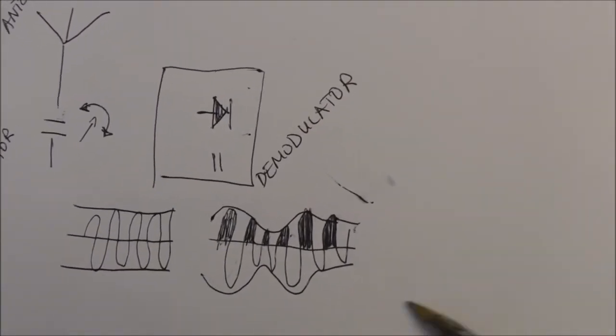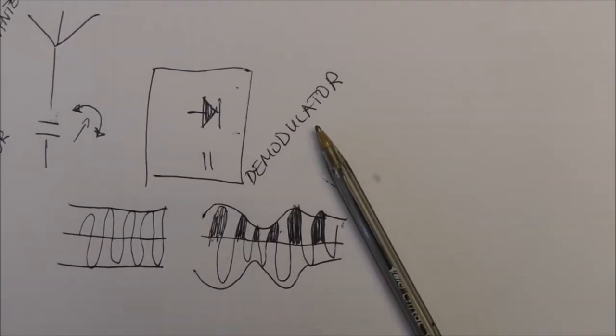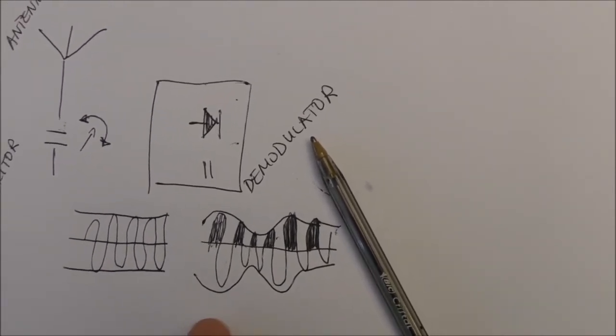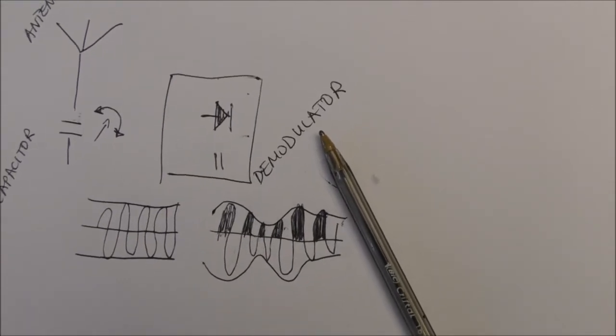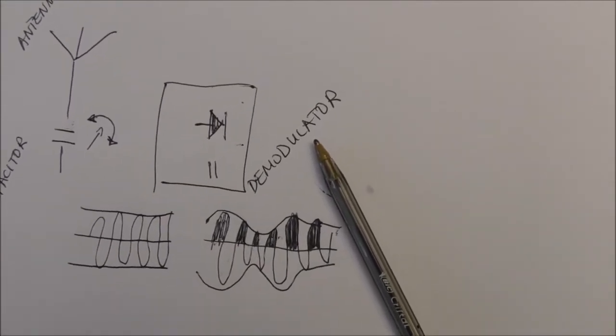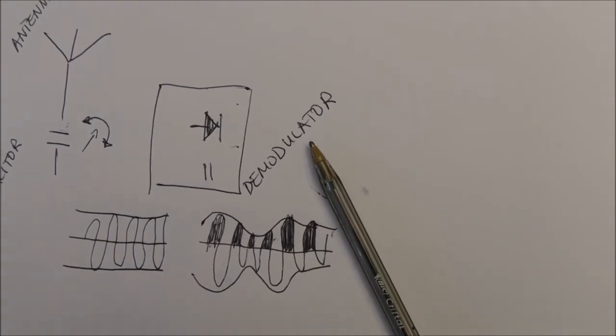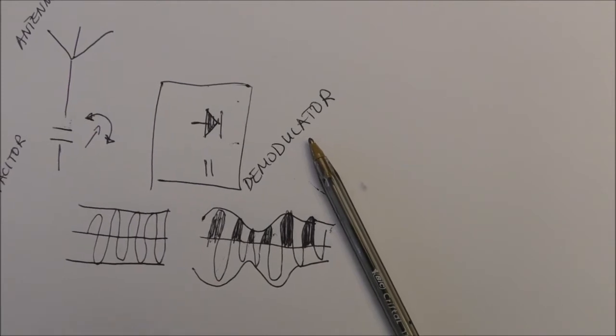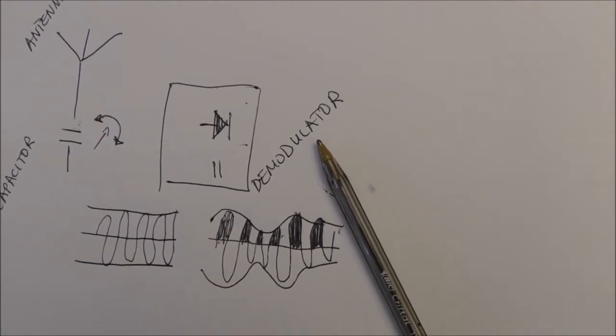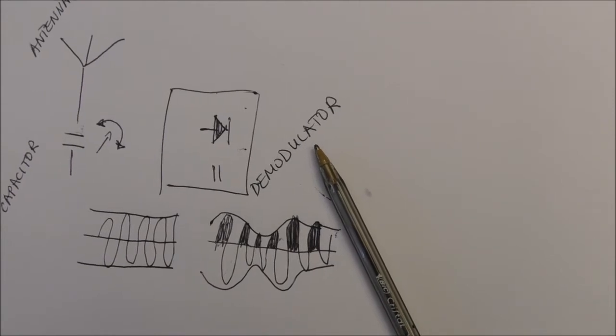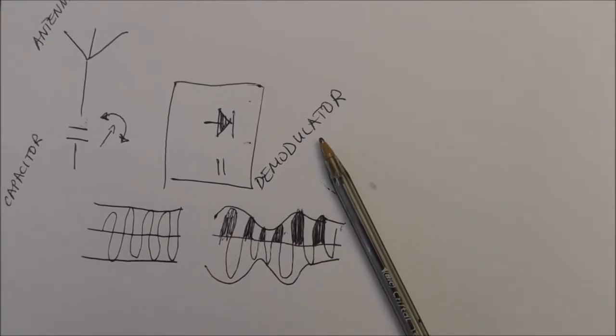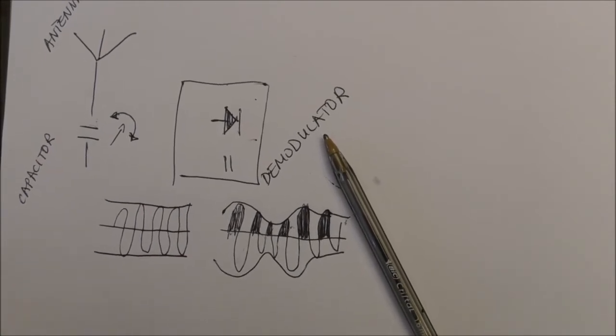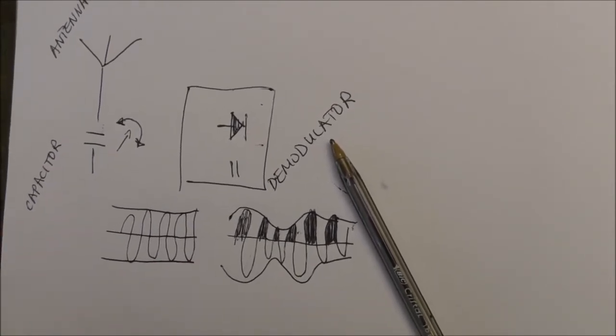After we put our radio signal through the capacitor, it then goes on to our demodulator. The heart of this demodulator is a diode, which takes only the top half of our radio signal. And once it does that, it's able to be sent to a speaker or an amplifier. And our demodulator used to be called a detector, back when radio signals were used by switching on and off a switch, like Morse code. But now, since we have different types of modulations for our radio signals, it's mostly used as a demodulator.